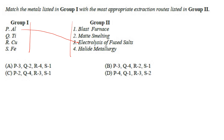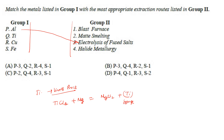Titanium is extracted using the Kroll process. In the Kroll process, titanium chloride is reacted with magnesium to form MgCl2 and pure titanium sponge. Since a halide is involved, this comes under halide metallurgy. So titanium matches with option 4. Copper extraction takes place through matte smelting.